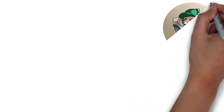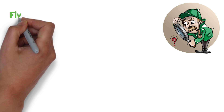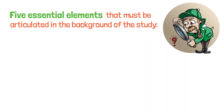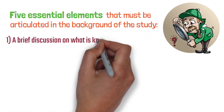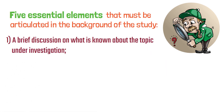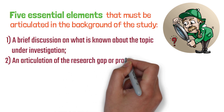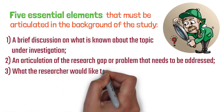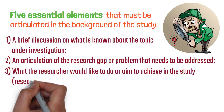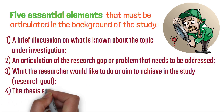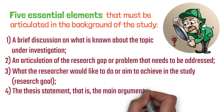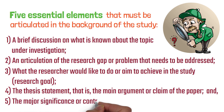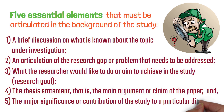Now, as we can see, we can find in the first paragraph five essential elements that must be articulated in the background of the study. Namely: first, a brief discussion on what is known about the topic under investigation; second, an articulation of the research gap or problem that needs to be addressed; third, what the researcher would like to do or aims to achieve in the study, or the research goal; fourth, the thesis statement — that is, the main argument or claim of the paper; and lastly, the major significance or contribution of the study to a particular discipline.